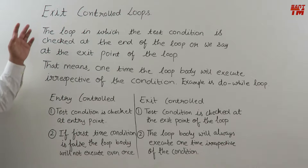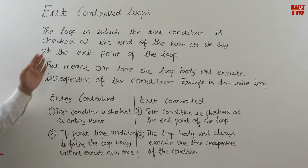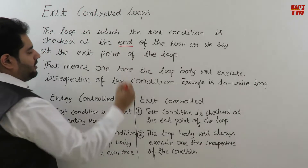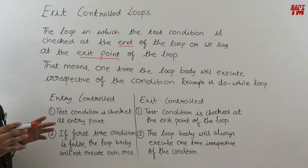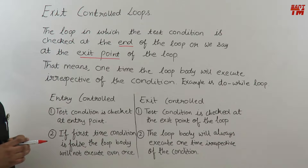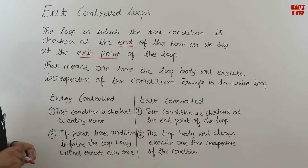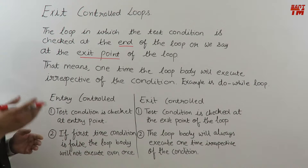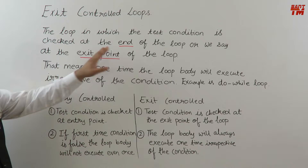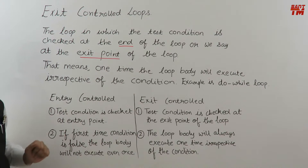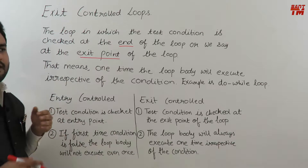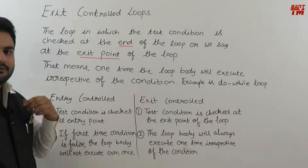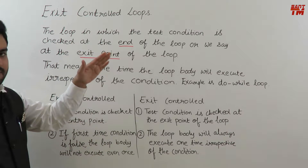Let's start with exit control loops — loops in which the test condition is checked at the end or at the exit point of the loop. We have studied entry control loops, where at the starting point of the loop we check the test condition. In for and while, the test condition is checked first, then the body executes. But in exit control loops the test condition is checked at the end, meaning one time the loop body will execute irrespective of the condition.